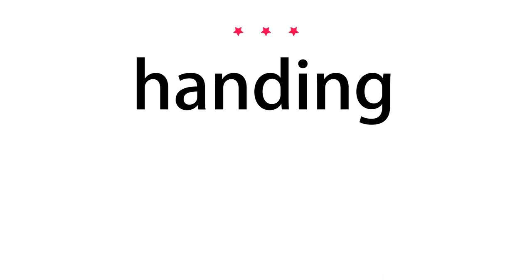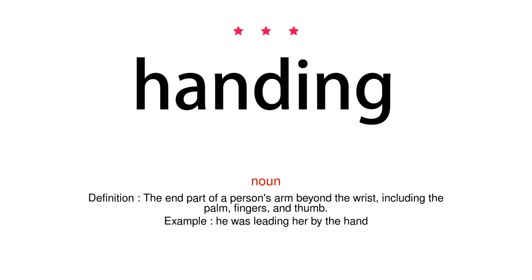Hand. Noun. Definition: The end part of a person's arm beyond the wrist, including the palm, fingers, and thumb. Example: He was leading her by the hand.